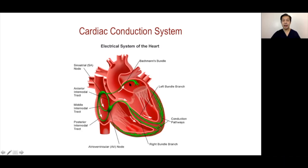So it is not really passive conduction through the atrial septum, but through a specialized conduction system from the right atrium to the left atrium. The AV node is similar to the SA node, but it is also a latent pacemaker, albeit with production of around 40 to 60 beats per minute only.